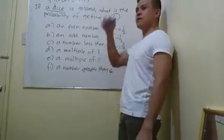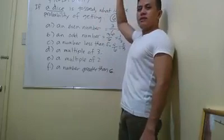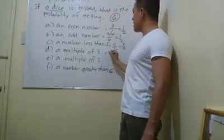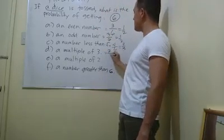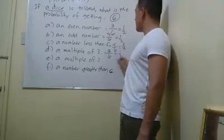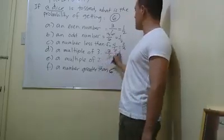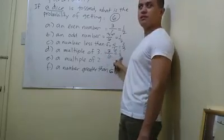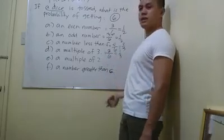Next — multiple of three. What are the multiples of three? We have three and six. So there are two multiples of three in a given dice, divided by six. Two divided by two is one, and six divided by two is three, so that is one third.